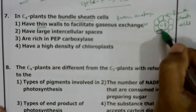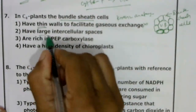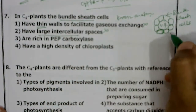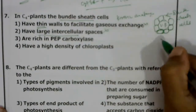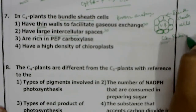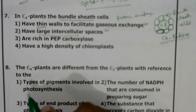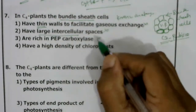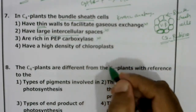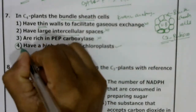Bundle sheath cells are compactly arranged without intercellular spaces, so 'large intercellular spaces' is wrong. They are not rich in PEP carboxylase — inside bundle sheath cells, the C3 pathway or Calvin cycle takes place and they contain the enzyme RuBisCO (ribulose bisphosphate carboxylase oxygenase). However, they do show a high density of chloroplasts. Correct answer: fourth option — high density of chloroplasts.